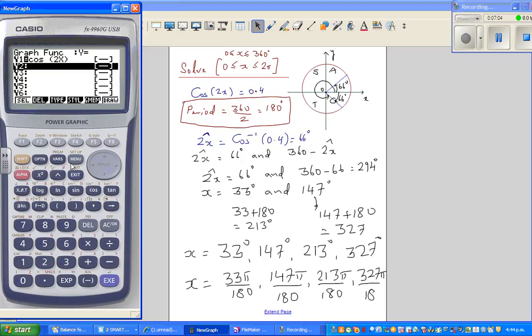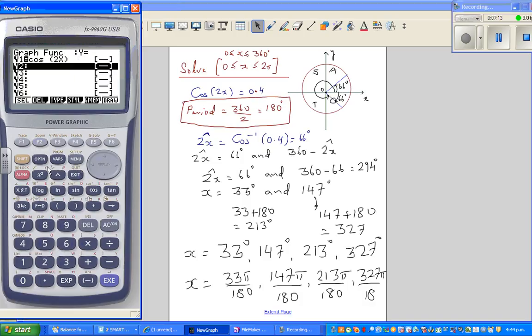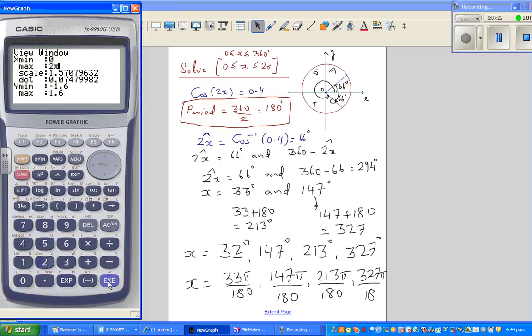Now if you want to write this in radians, you change the setting. Change the setting to radians and then shift V window, change the radians from 0 to 2π. So the answer would be decimal. Then you go gsol, the same thing, xcalc 0.4. This is 0.579. If you go 33π divided by 180, it would be this number. The next number would be 2.56. You can check—147 times π divided by 180 would give you this number, and so on.